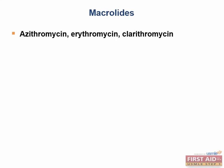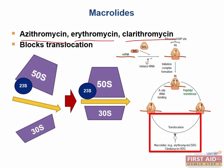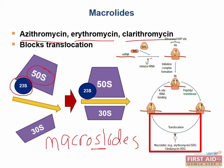Now let's talk about the macrolides, an important class of drugs that include azithromycin, erythromycin, and clarithromycin. These medications bind to the 23S ribosomal RNA subunit of the 50S subunit and block translocation. To remember that these drugs block translocation, use the mnemonic 'macro slides' — they block the sliding of the newly formed polypeptide strand.